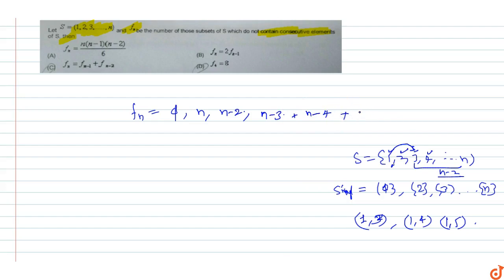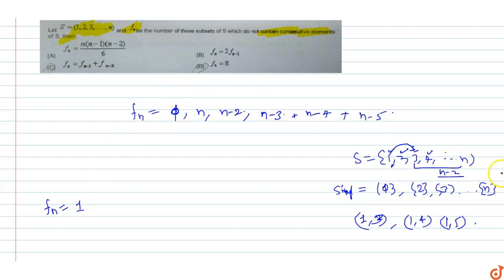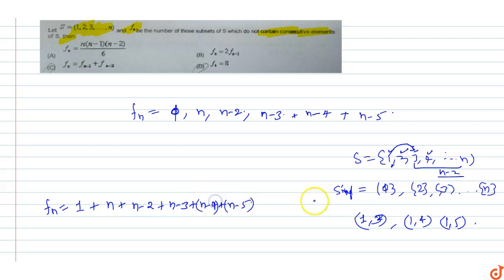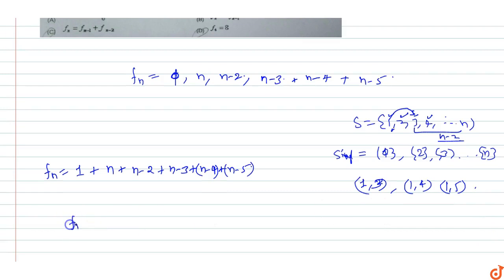Continuing, with n minus 4 we get n minus 5 subsets, and so on. So f(n) becomes: 1 (empty set) plus n (singletons) plus (n minus 2) plus (n minus 3) plus (n minus 4) plus (n minus 5) and so on.